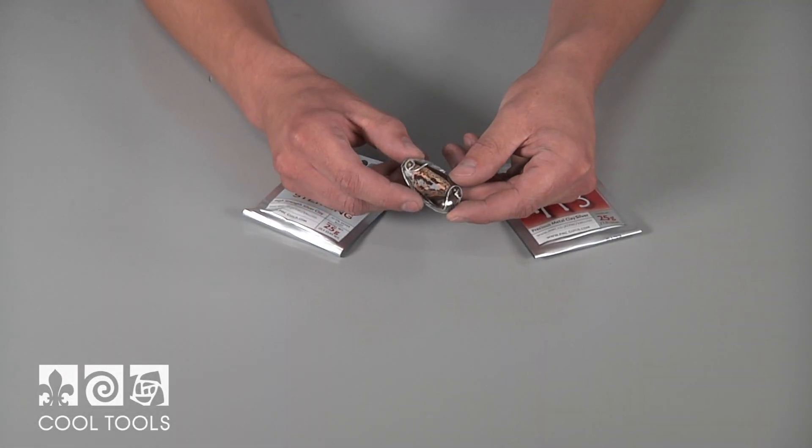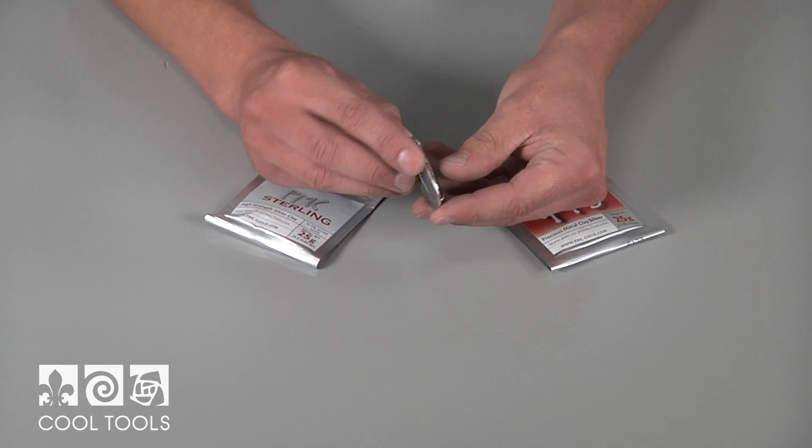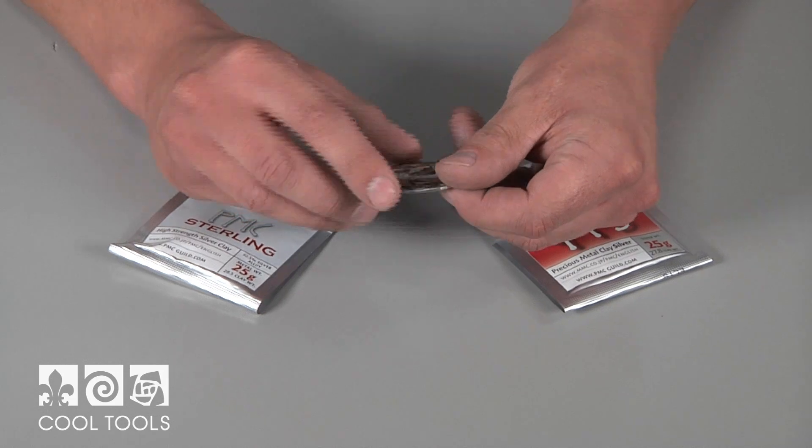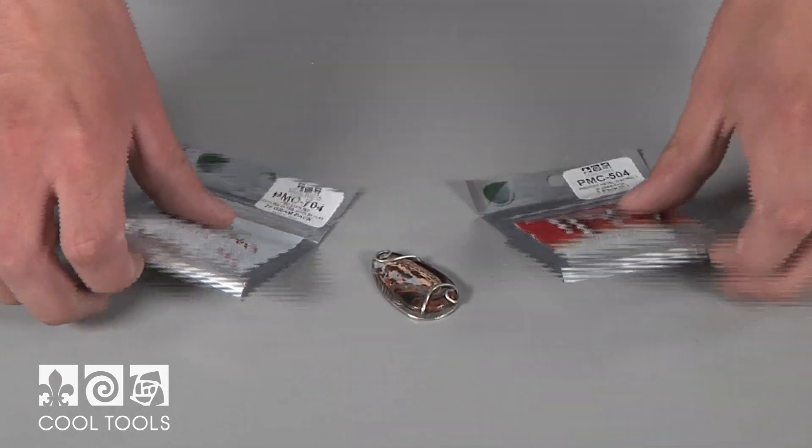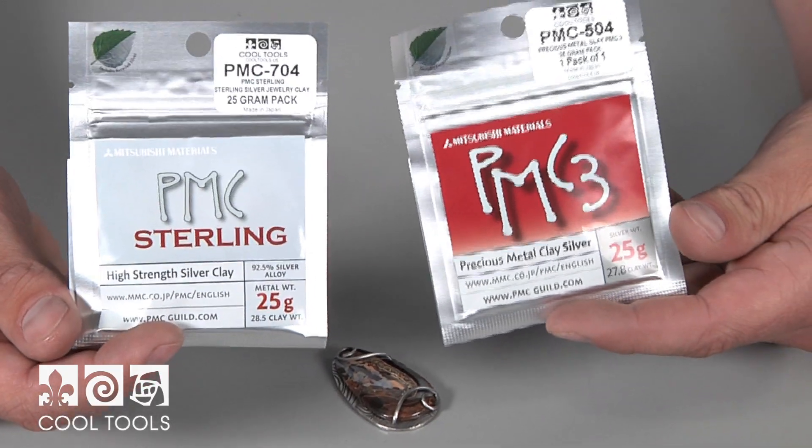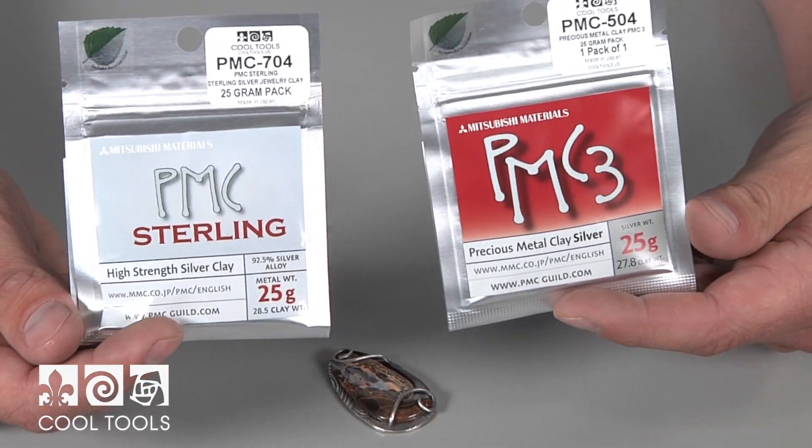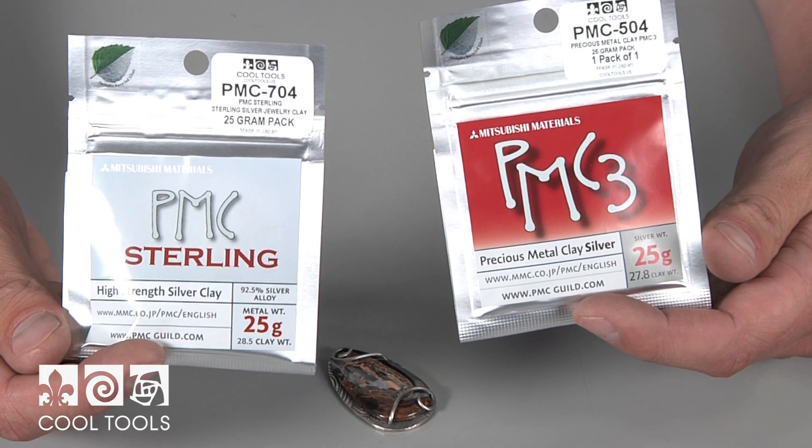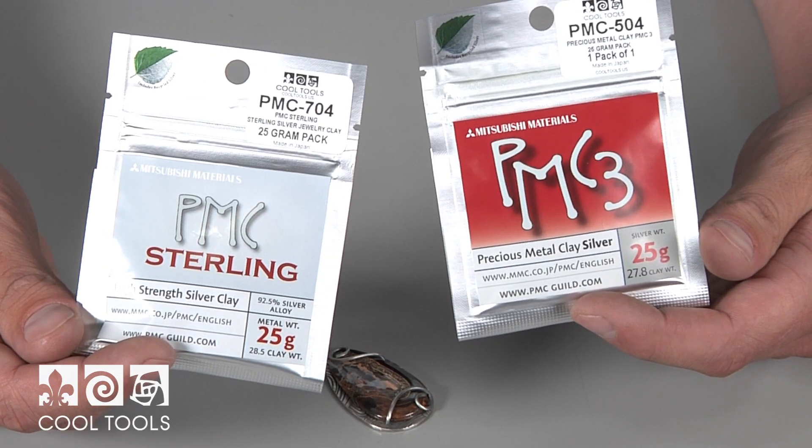Sterling silver is the industry standard because of the strength and beauty it provides. However, most people try to avoid the carbon firing associated with PMC Sterling. PMC 960 clay is a new technique of enriching the sterling silver clay with PMC III. Mixing these two clays results in a stronger metal clay that can be fired on an open kiln shelf without carbon.